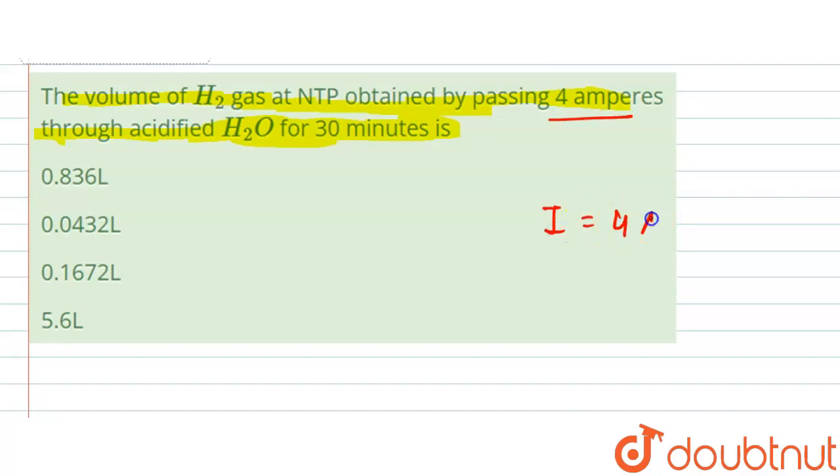We are given the time as 30 minutes, so it will be 30 into 60 seconds, because one minute is equal to 60 seconds. Here we have Q is equal to I into t.